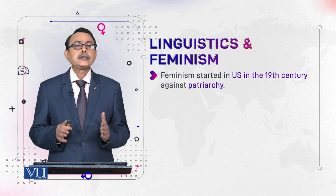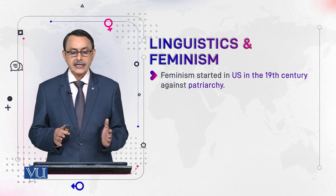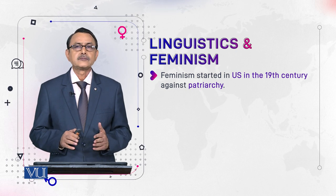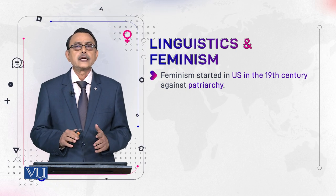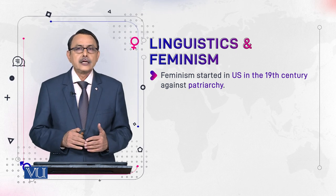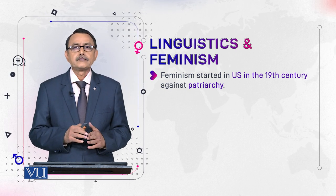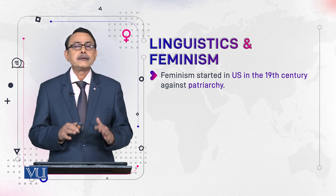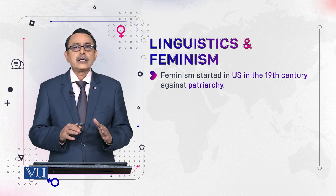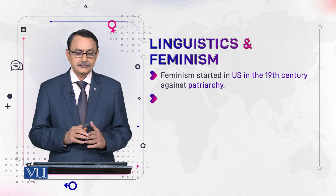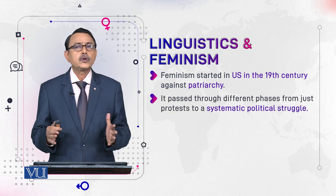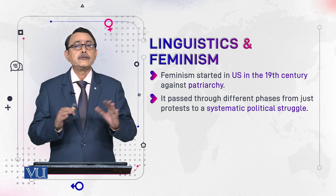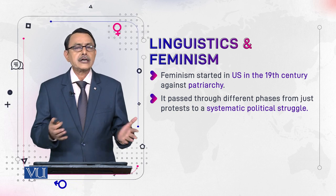Feminism started in the US in the 19th century against patriarchy — patriarchy means domination of males. They started as a movement demanding justice and equality. It passed through different phases, or sometimes they call it different waves: first wave, second wave, third wave.